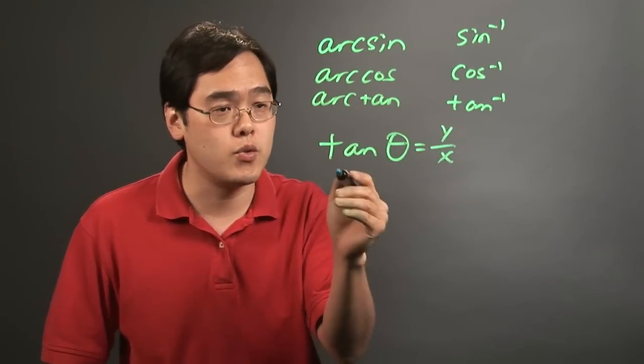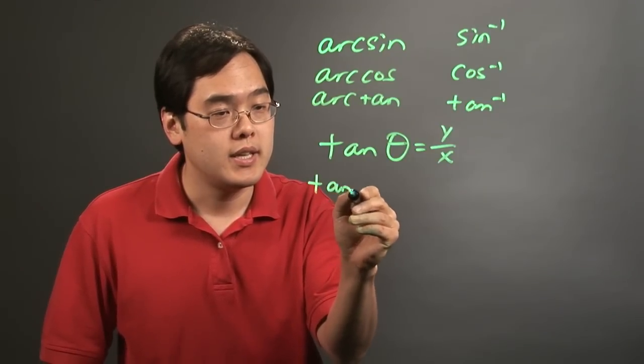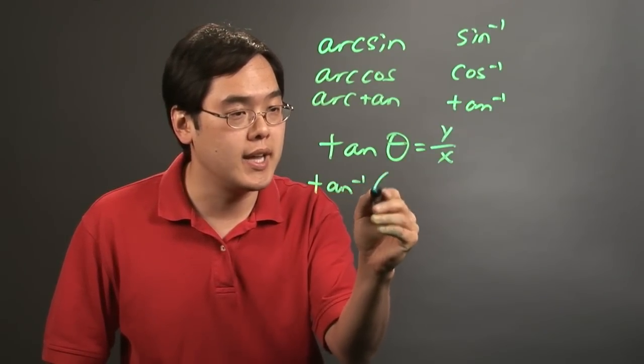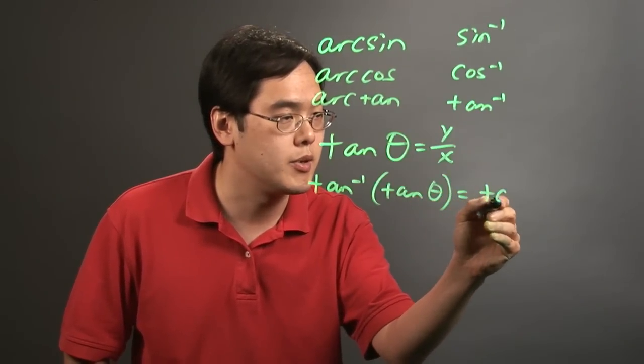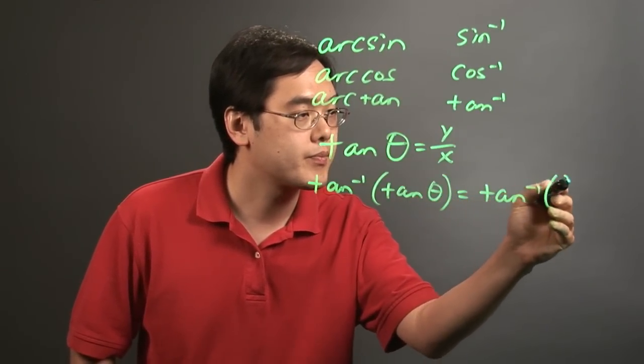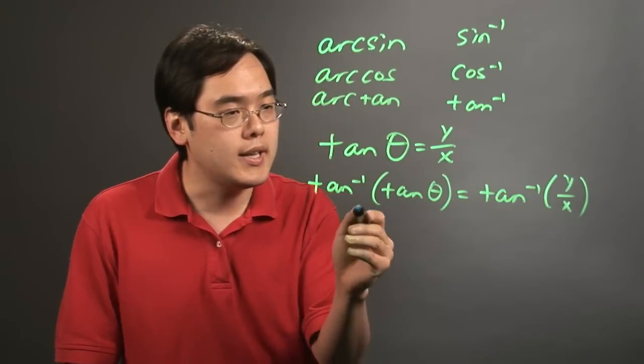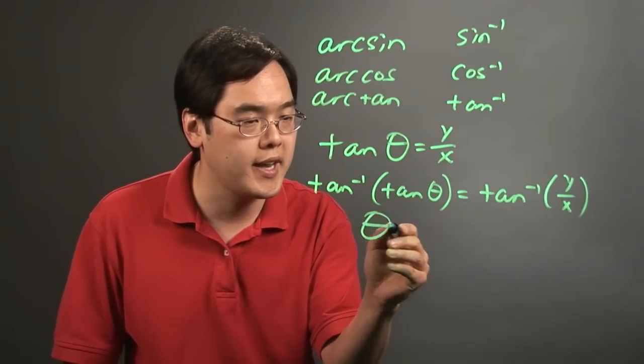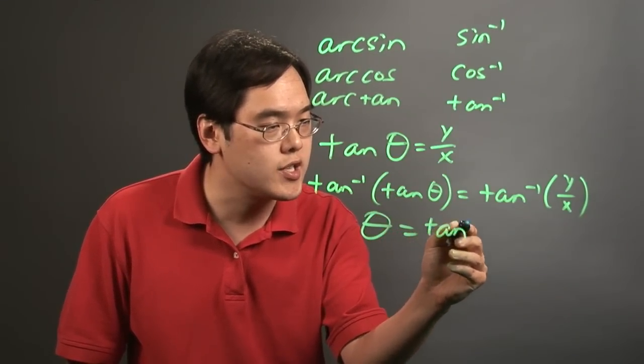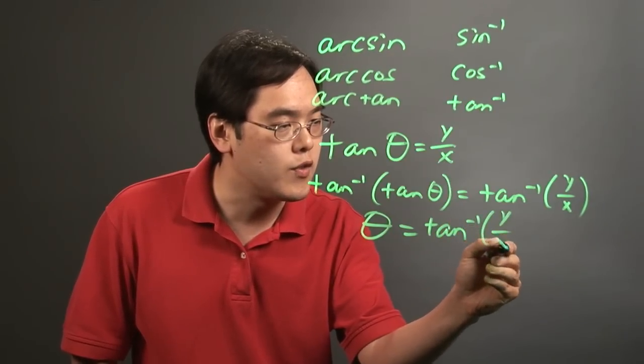To solve for the angle themselves, what you want to do is you want to take the inverse tangent of both sides, not multiplying, but finding the tangent inverse. Take the tangent inverse of both sides like this, and what this tells you here is the tangent inverse and tan, they cancel each other out, so you have theta is equal to the inverse tangent of y over x.